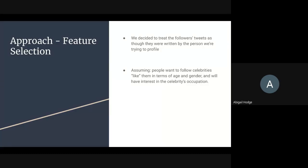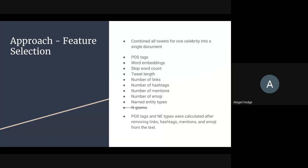So a little bit about our approach. Our starting approach was to treat the followers' tweets as though they were written by the person we are trying to profile. Our basic assumption is that people want to follow celebrities that are like them in some way — either in terms of their age or their gender, or because they have interest in the things the celebrities are doing. Someone who tweets a lot about politics is probably more likely to follow a politician, for example. So we combined all the tweets for one celebrity into a single document and pretended that a single person wrote all of these tweets — that person being the one we are trying to profile.